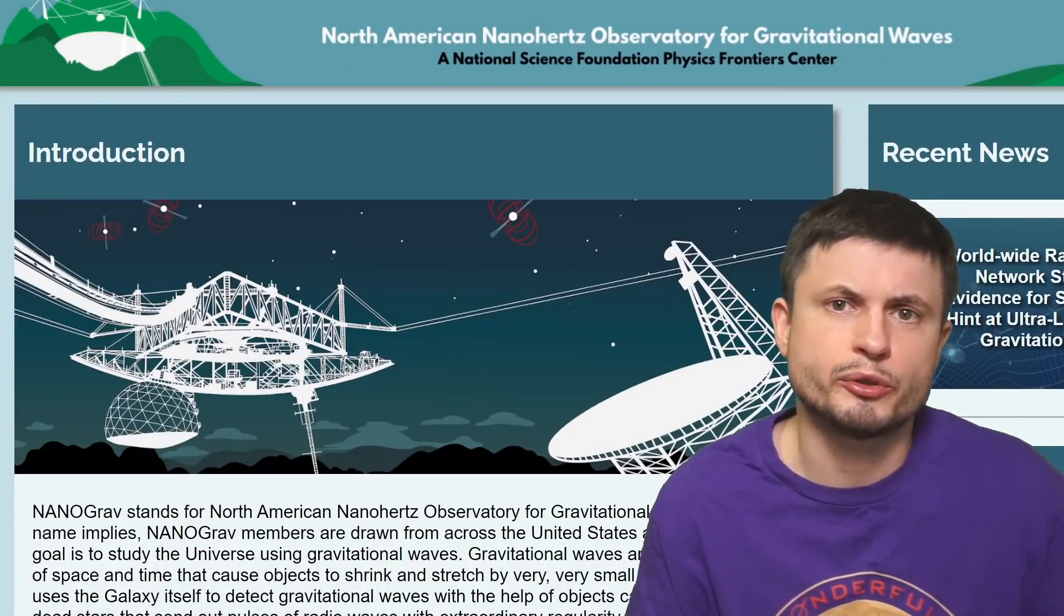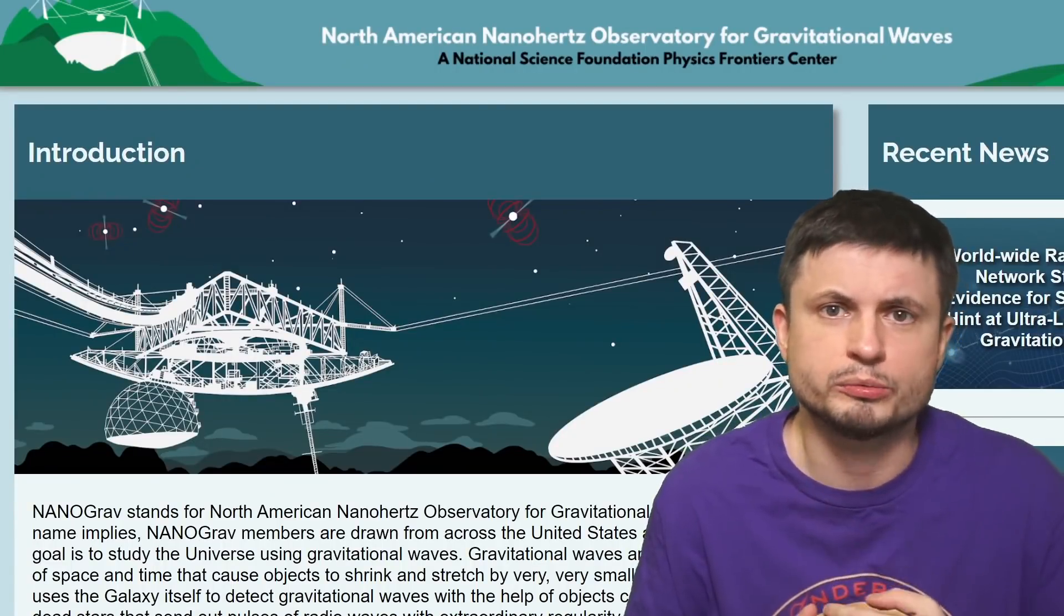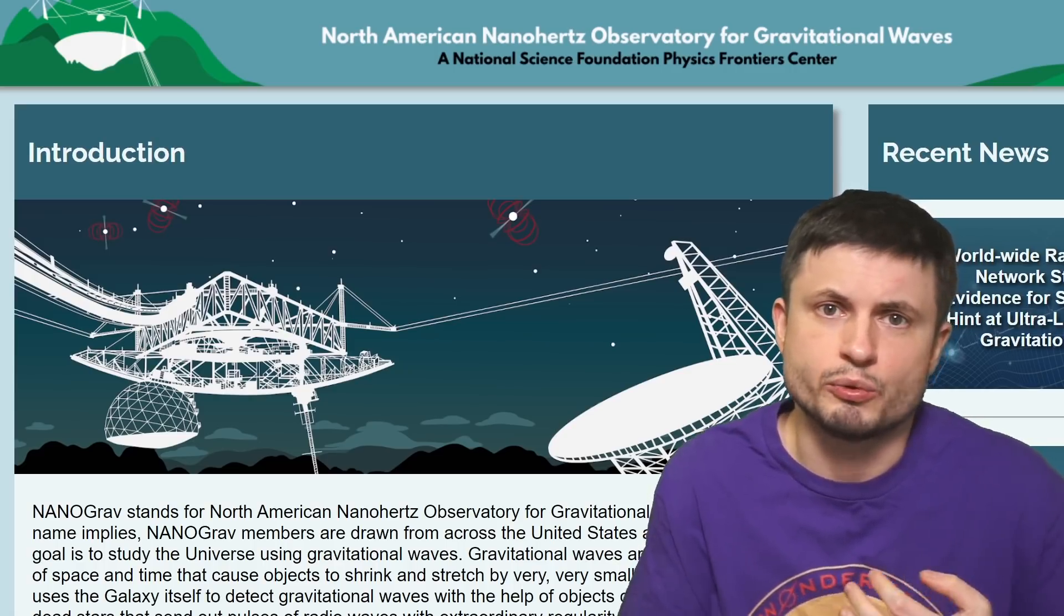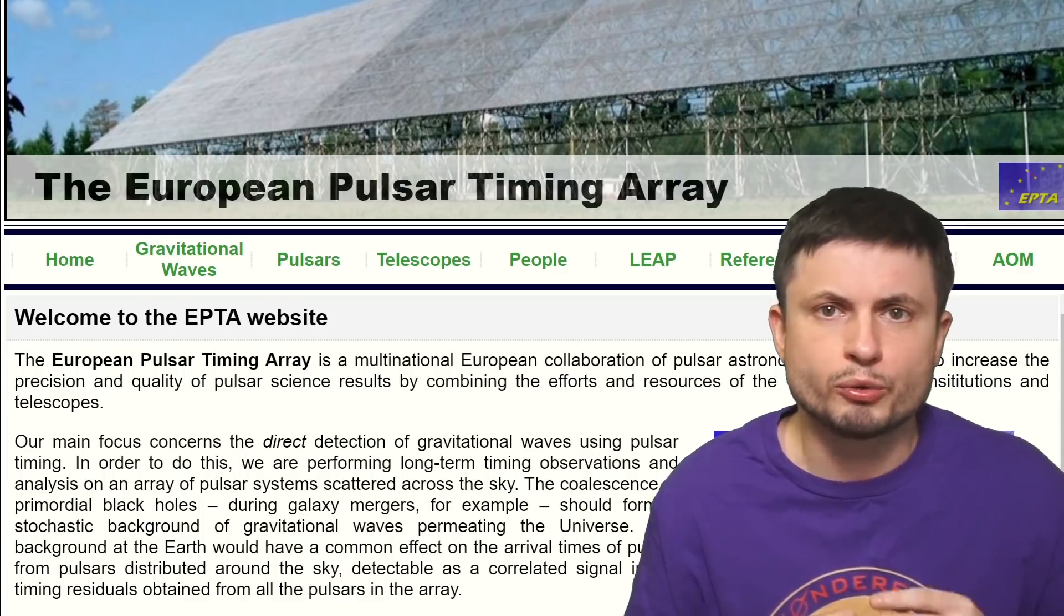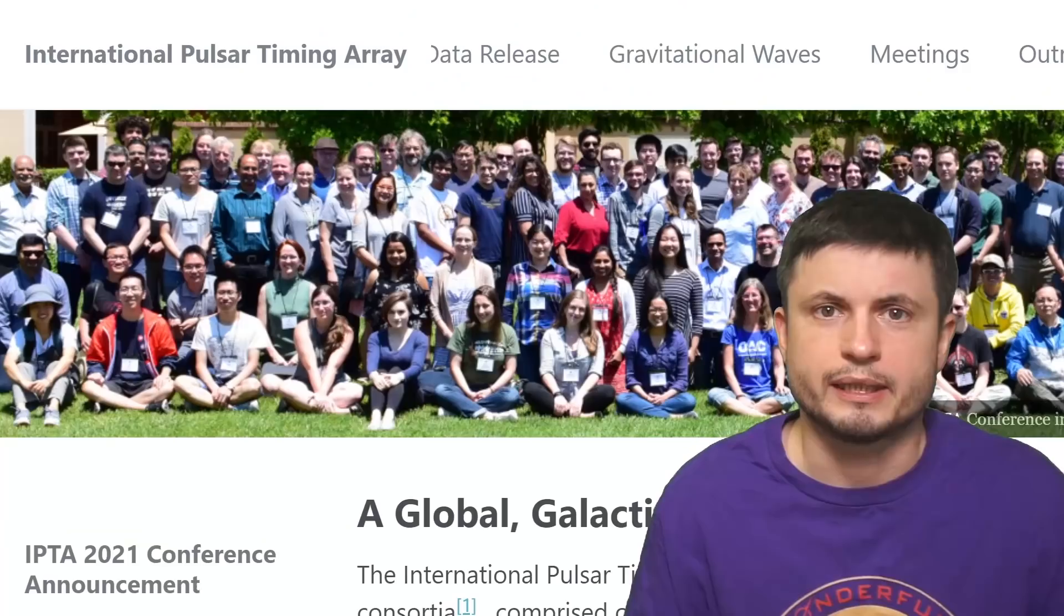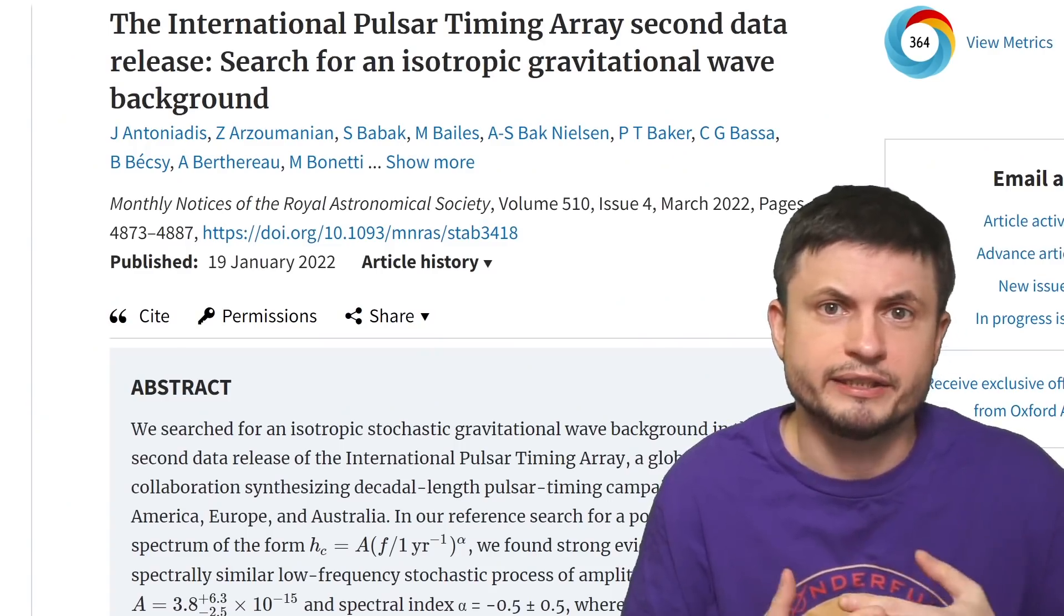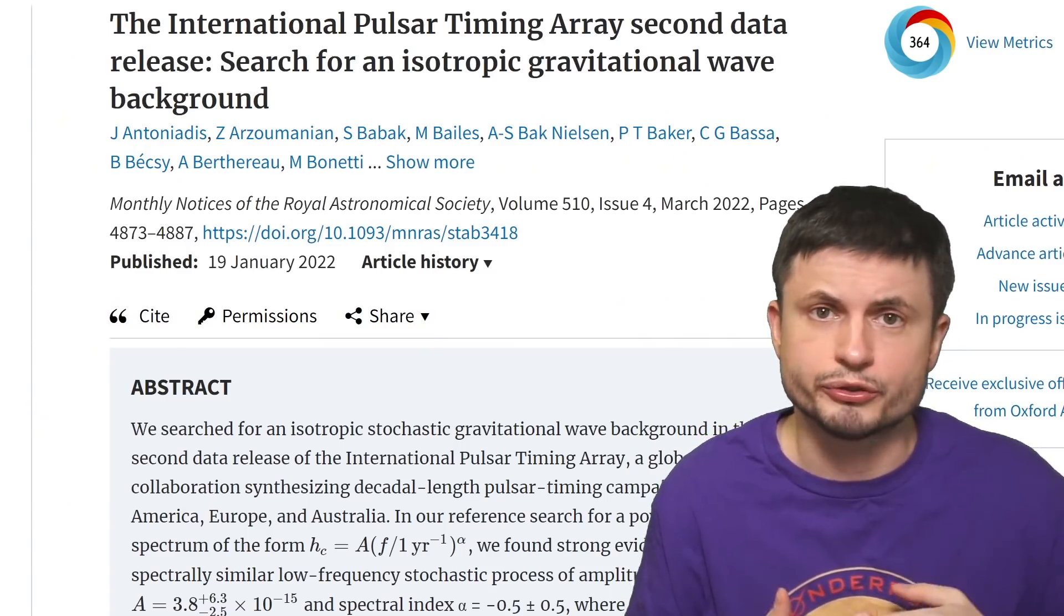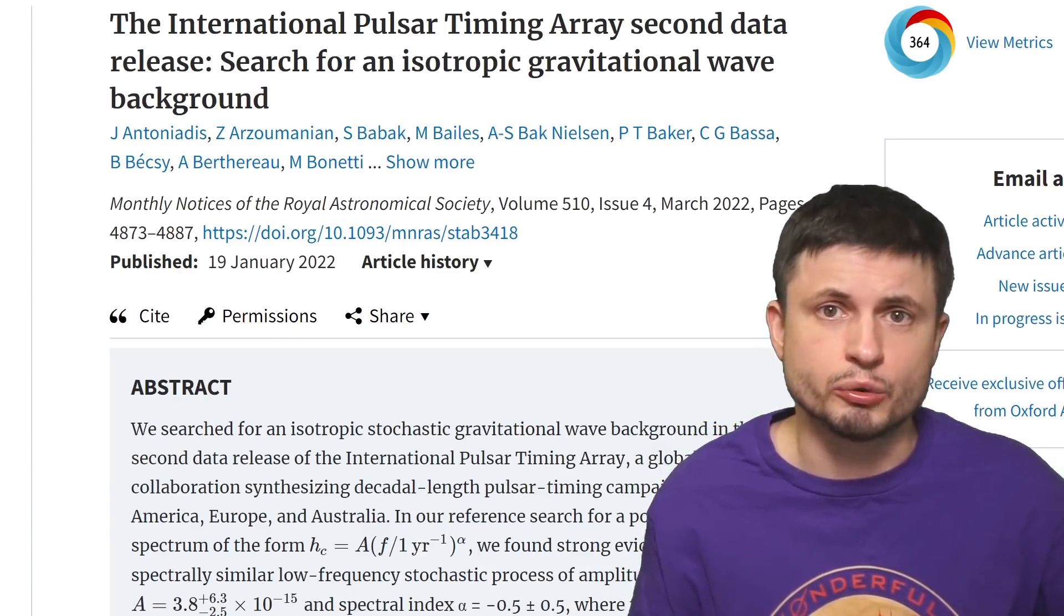That's precisely what a lot of these collaborations have been doing for over a decade now. Nanograph is probably the biggest one. Last year it released the data from 45 different pulsars. But we also have the European Pulsar Timing Array, and the International Pulsar Timing Array, that have recently combined the data from 65 various pulsars, once again confirming that something is definitely going on out there.